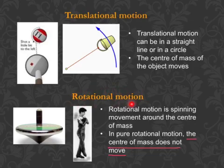Translational motion can be in a straight line, like this billiard ball here, or in a circle, like this bucket here. The center of mass of the object, both the billiard ball and the bucket, moves.